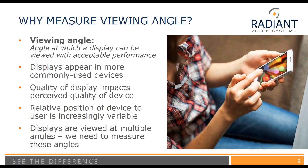For the purpose of this webinar, let's define viewing angle: that's the angle at which a display can be viewed with acceptable performance. Why would we measure this? Because displays appear in more commonly used devices. It used to be that displays were in devices like televisions and telephones, where they were viewed mostly straight on, and the quality of the display impacts perceived quality of those devices. The relative position of the device to the user is increasingly variable, and since these displays are viewed at multiple angles, we need to measure all of these angles.